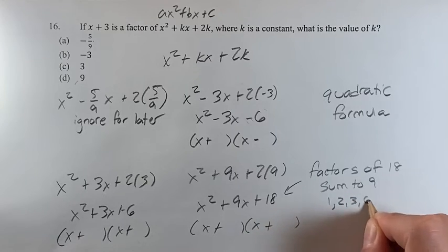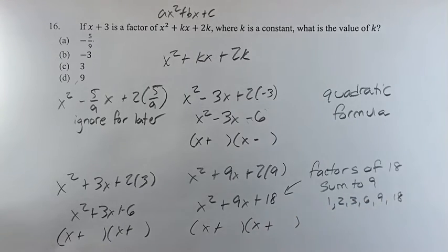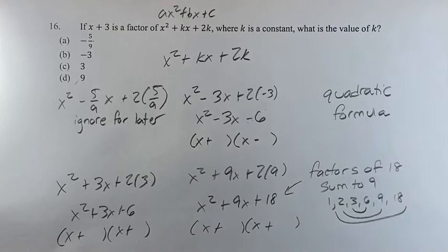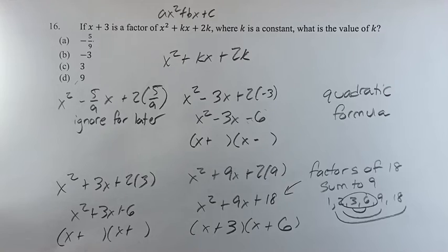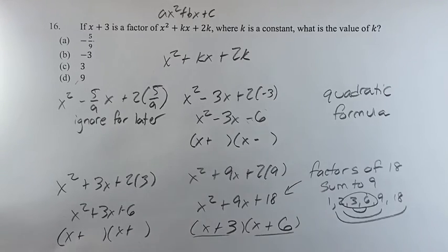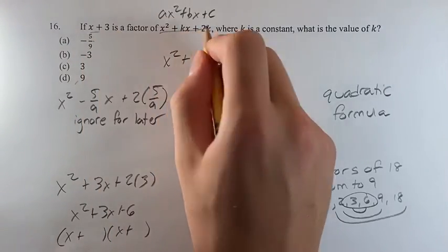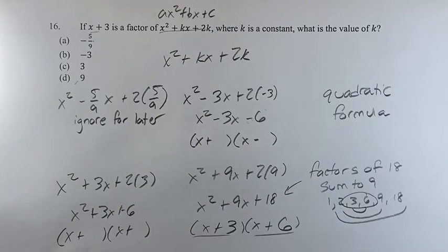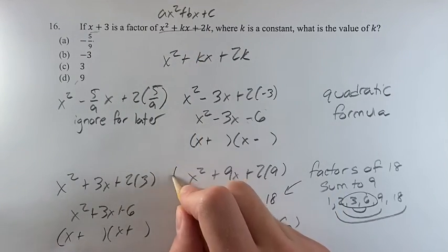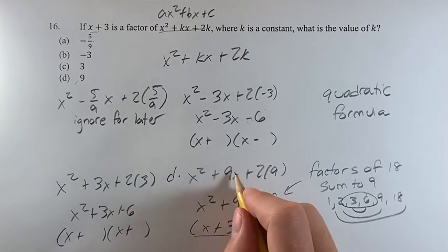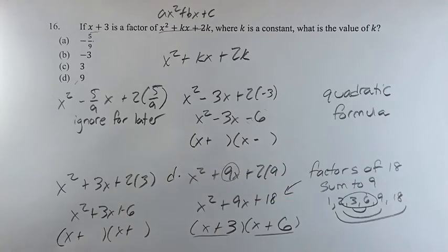Just a reminder, these are your factors of 18, and they are paired up. You'll notice that 3 and 6 are paired up, and 3 and 6 sum to 9. These are your two factors. So x plus 3 is a factor of x squared plus kx plus 2k for the case when k is equal to 9. That's going to be your answer.